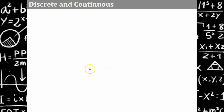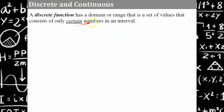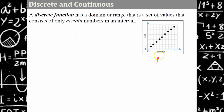A discrete function has a domain or range that consists of only certain numbers in an interval — we typically focus on the domain. For example, a function representing the number of tickets purchased and their cost: these points are not connected. It's a discrete function because each point stands alone. You cannot buy half a ticket or two and a half tickets — you need to buy whole number tickets. So you have discrete costs for one ticket, three tickets, and so on.